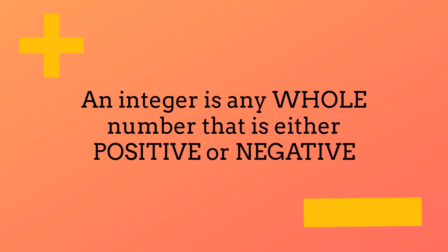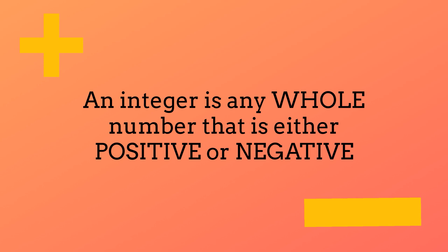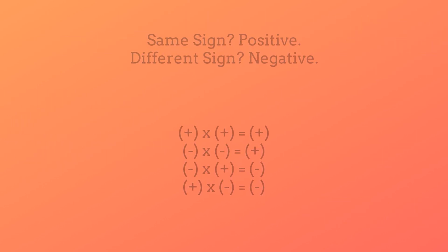Alright, so let's first recall that an integer is any whole number that's either a positive or a negative number, and this also includes the number 0. So what are the rules for multiplying these integers? Once you get to know them, they're actually very simple.